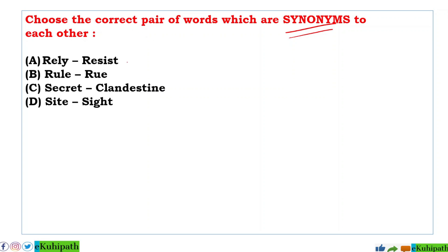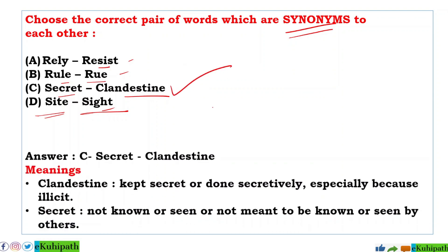Next synonym pair: A: really/regis, B: rule/reuse, C: secret/clandestine, D: site/outside. The answer is C — secret and clandestine. Clandestine means kept secret or done secretively, especially because it is illicit. Secret means not known or seen or not meant to be known. So secret and clandestine are synonyms.